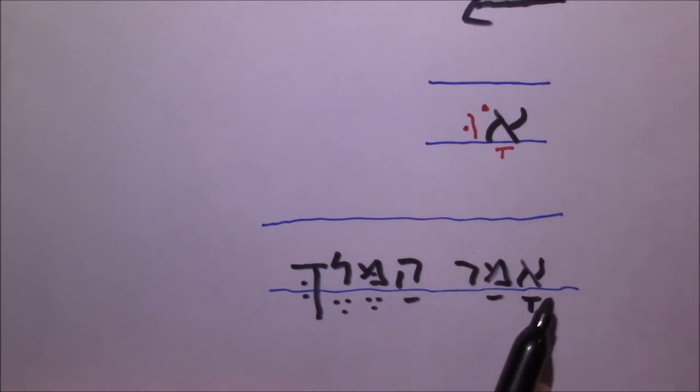You notice how I wrote each consonant and then its vowel immediately afterwards. I didn't write all the consonants and then fill in the vowels, but rather just one by one. This will help you to make sure you're getting the right syllable structure and also that you don't forget anything.